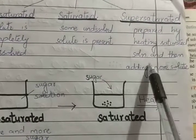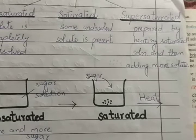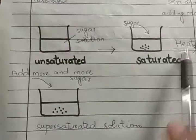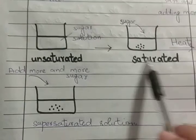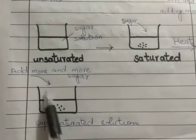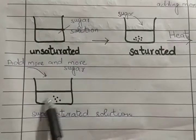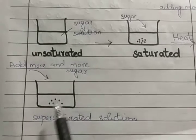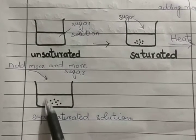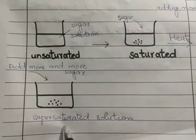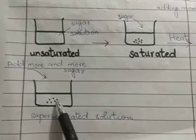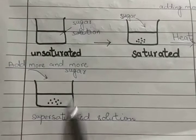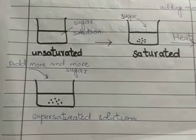A supersaturated solution is prepared by heating a saturated solution and then adding more and more solute. When the solution is heated, the sugar dissolves. We keep adding more sugar, and when cooled, the excess solute crystallizes. Such a solution is called a supersaturated solution.